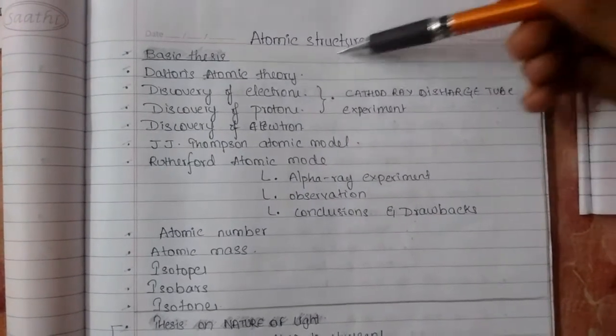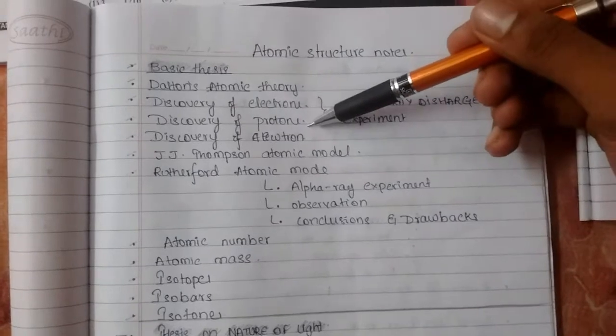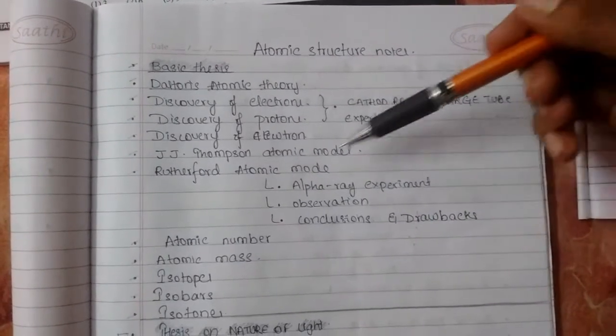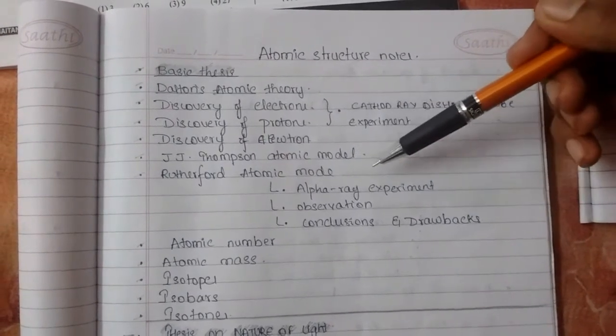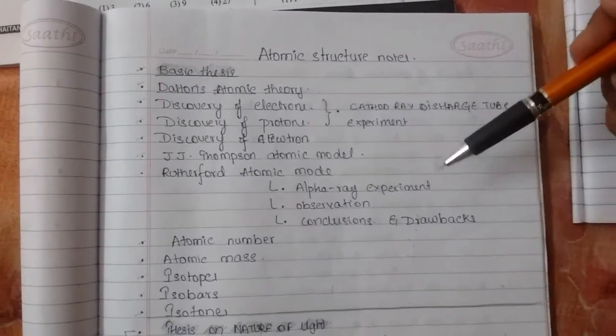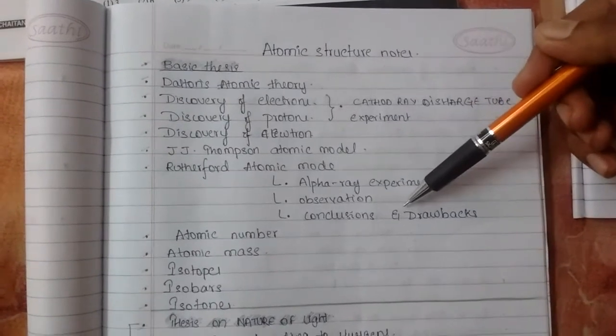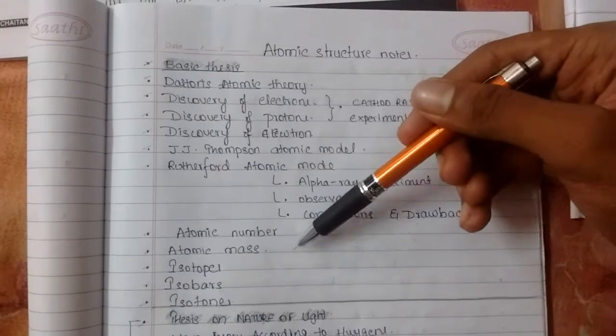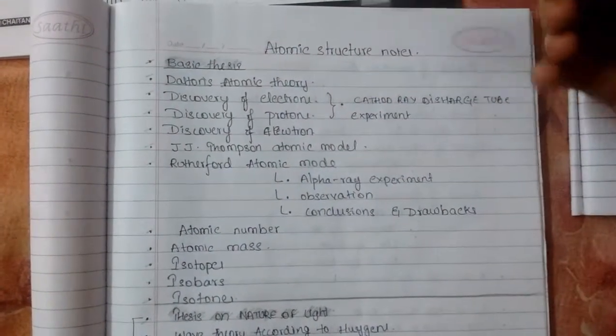And it includes Dalton's atomic theory, discovery of electrons and discovery of protons through the cathode ray discharge tube experiment and discovery of neutrons, and then J.J. Thomson atomic model and Rutherford atomic model by experimenting the alpha ray experiment and its observations, conclusions and drawbacks. And then we'll know about the atomic number, atomic mass, isotopes, isobars, isotons.